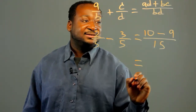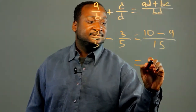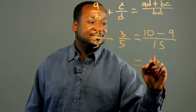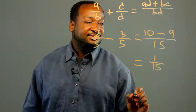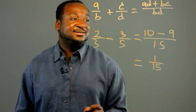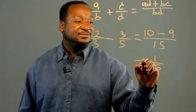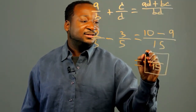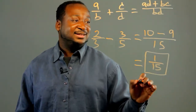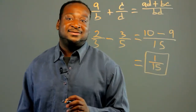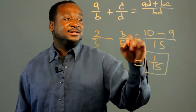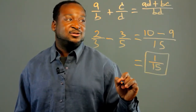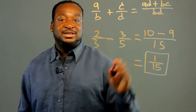So this gives us 1 over 15, and that's our answer. There's a good review — you can also use the greatest common factor method to check it. This is a great way to do your addition and subtraction of fractions; just keep this formula memorized. Thank you.